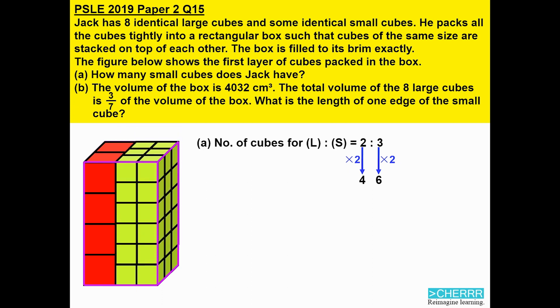Knowing that one layer for the small cubes has six cubes, and we have six layers, six multiply by six will get us the total number of small cubes. Therefore, we have 36 small cubes.